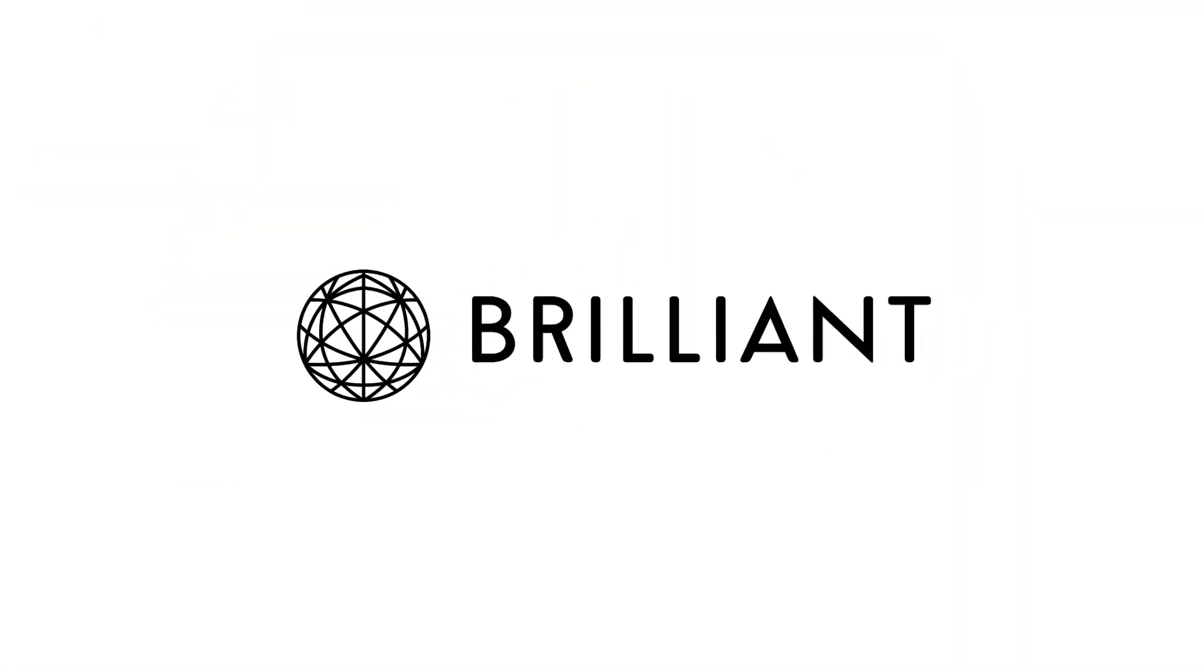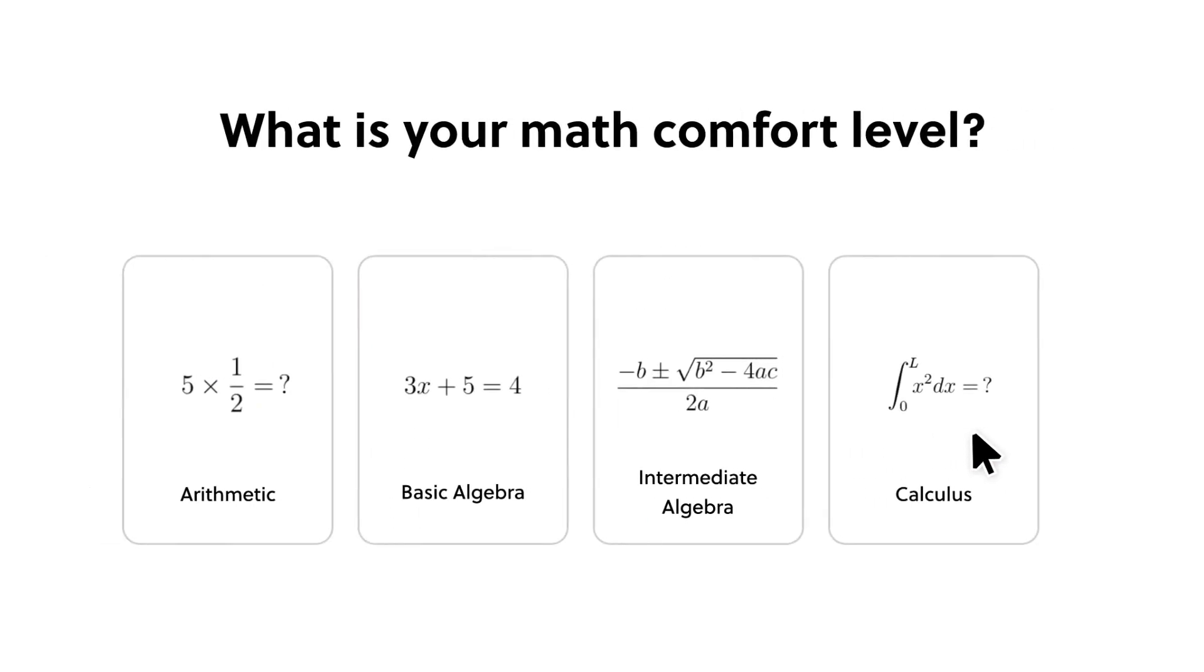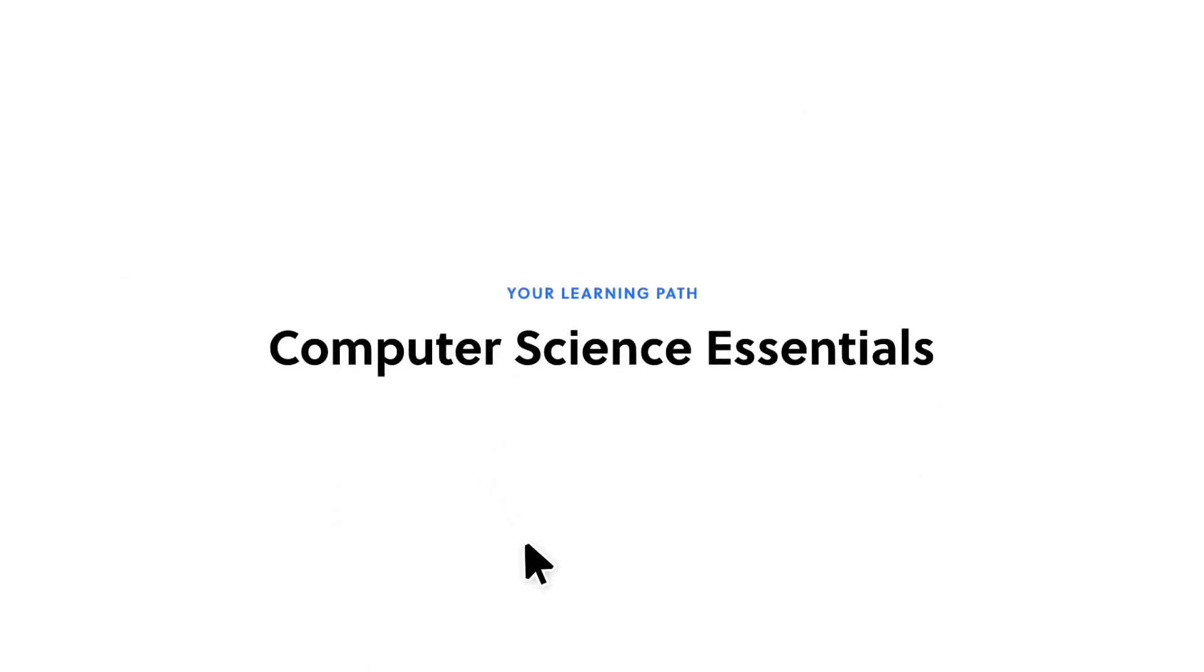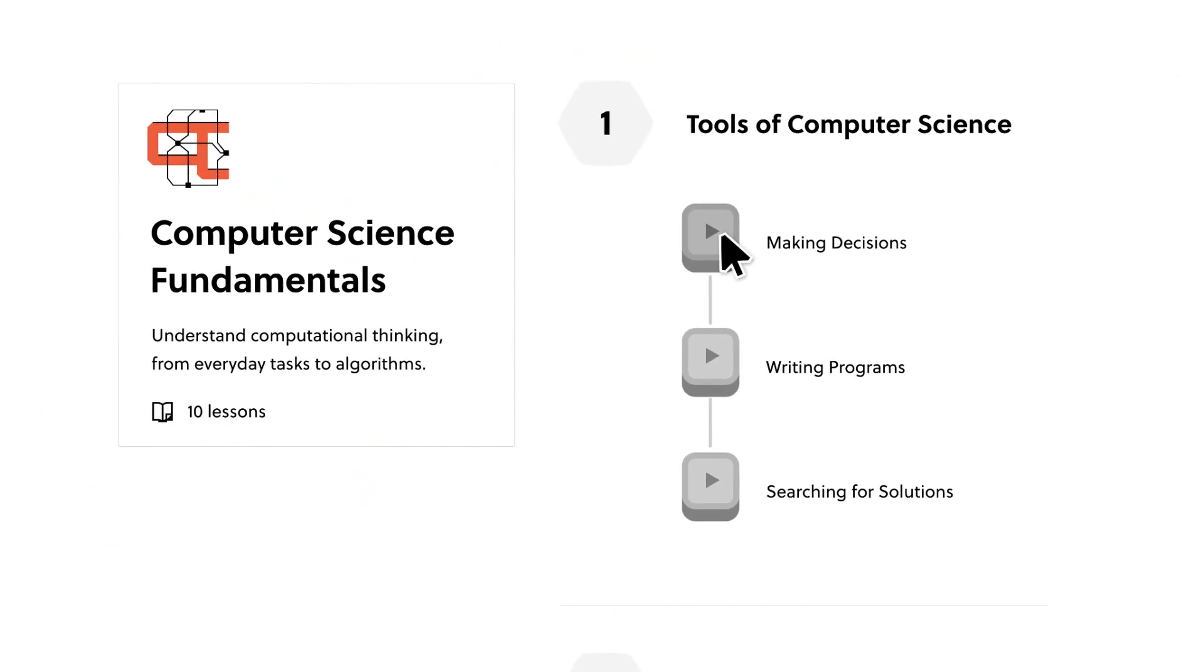Brilliant.org is one of the best ways to interactively learn computer science, math, and physics. There are thousands of lessons from computational biology to neural networks, algorithms, and even programming, with new lessons being added monthly.